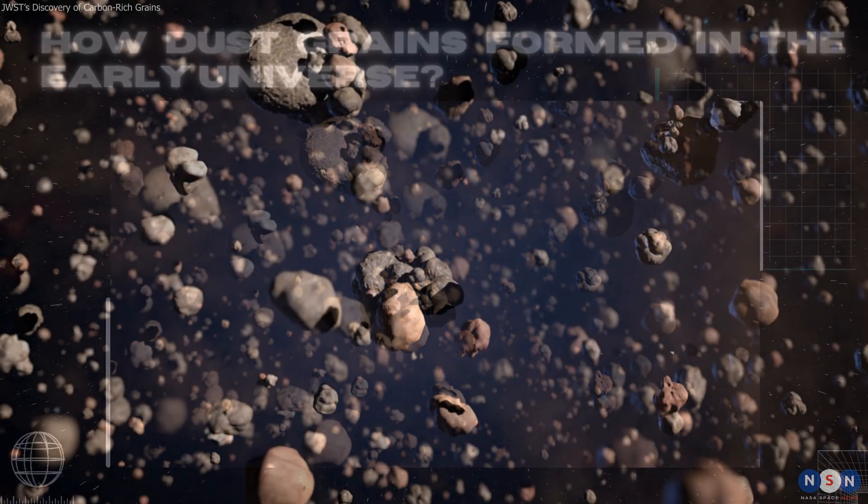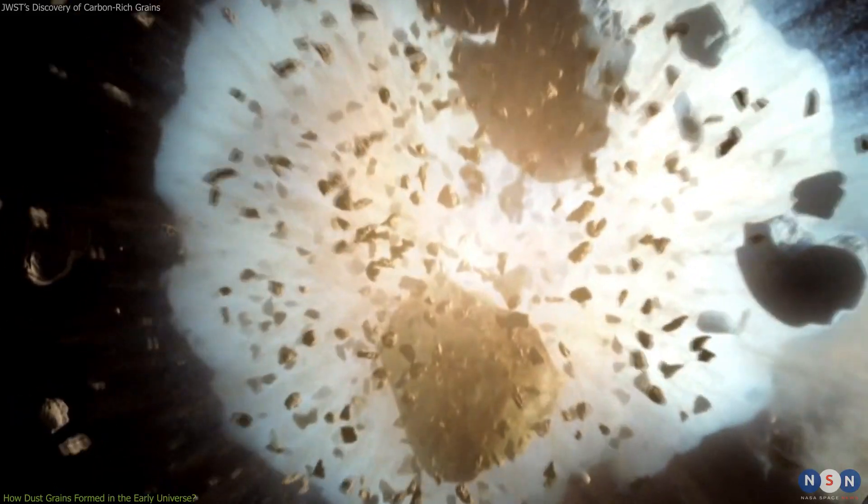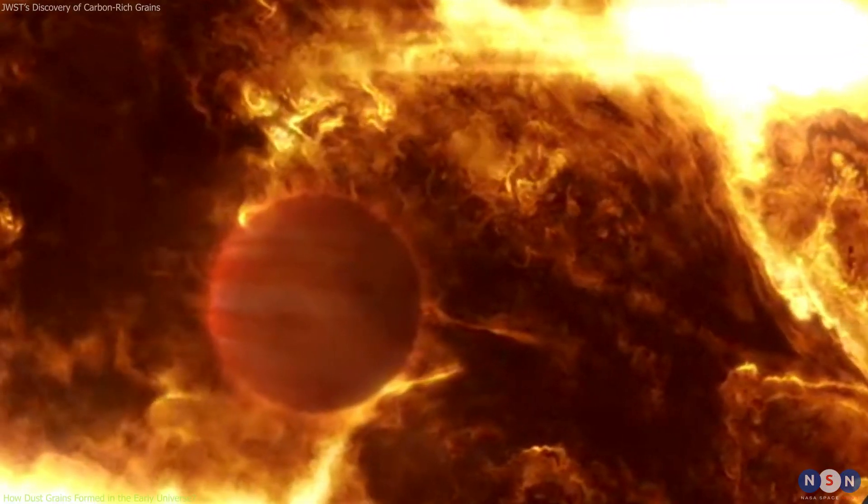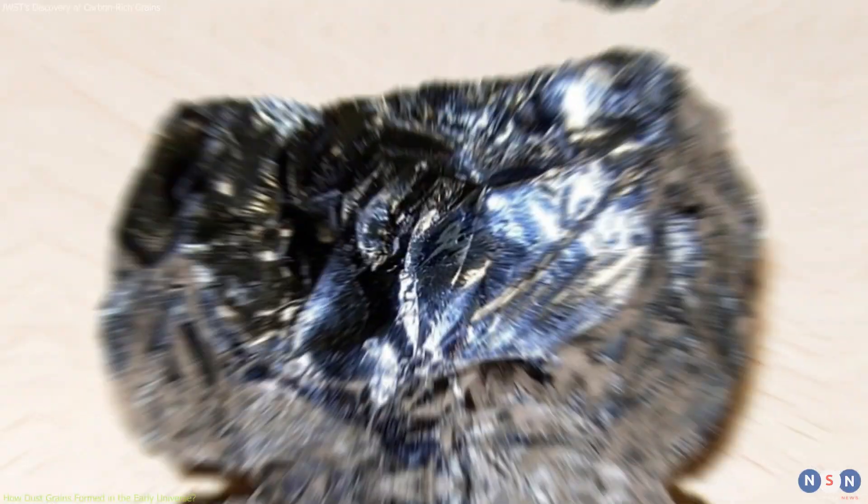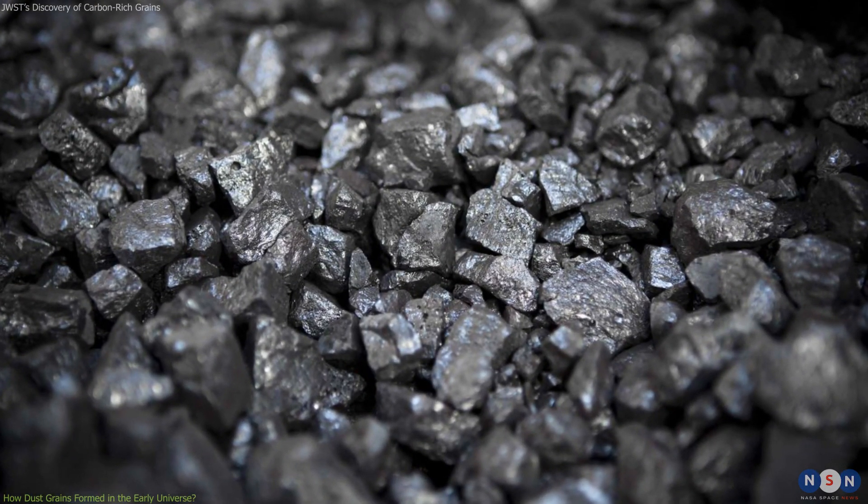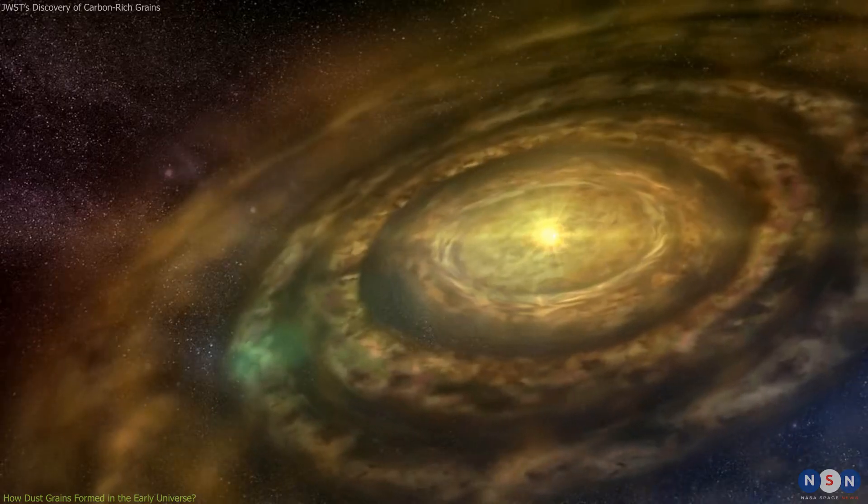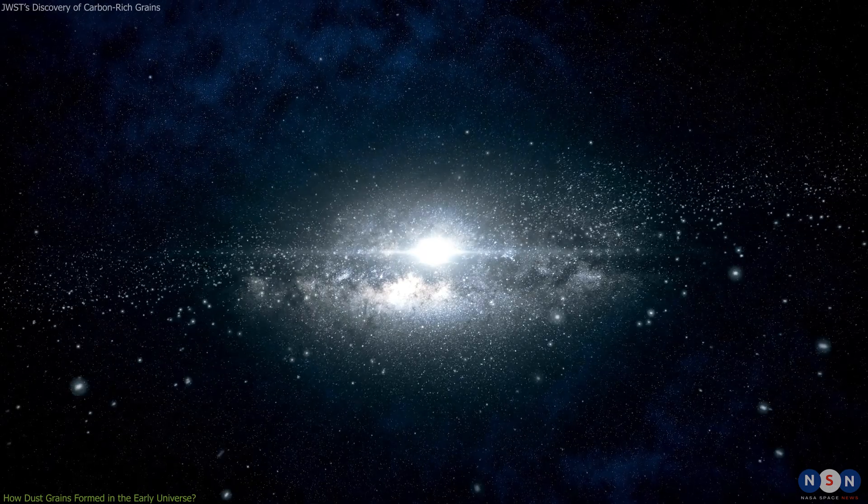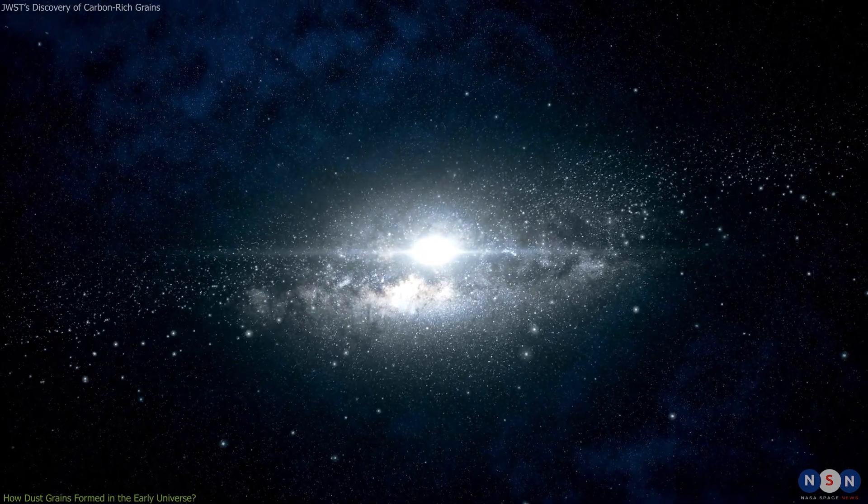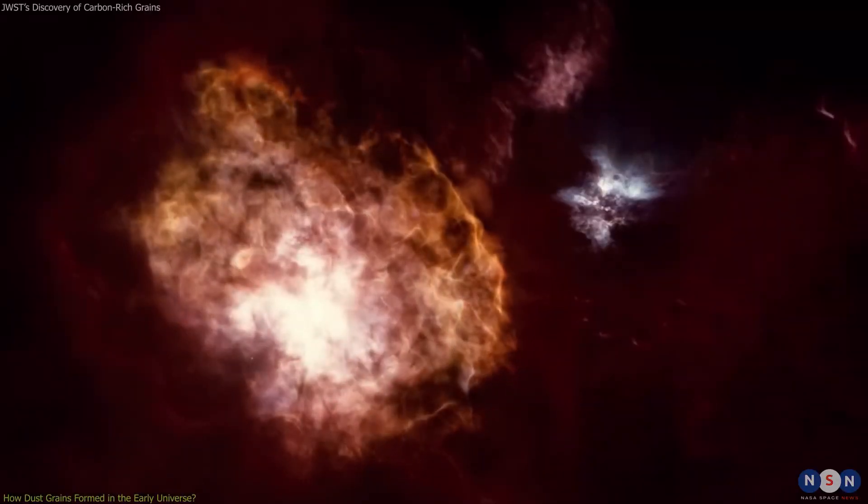Dust grains are tiny solid particles that form in the atmospheres of stars and are ejected into space when stars die. They are made of various elements such as carbon, oxygen, silicon, iron, and so on. Dust grains play a crucial role in many astrophysical processes such as star formation, planet formation, and the evolution of galaxies. They also affect how we observe the universe by scattering, absorbing, and emitting light.